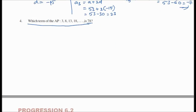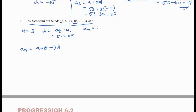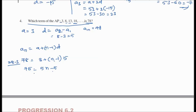Which term of the AP equals -78? Here a = 3 and d = a2 - a1 = 5. Using an = a + (n-1)×d: -78 = 3 + (n-1)×5. So 5(n-1) = -81... actually 78 is positive here: 75 = 5(n-1), so n-1 = 15 and n = 16 is the answer.